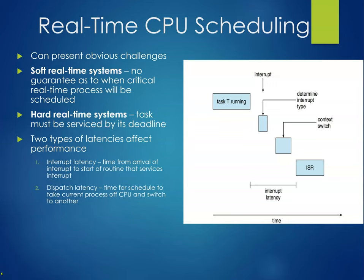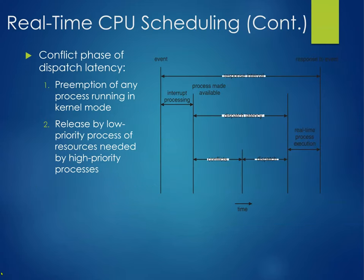Real-time CPU scheduling is a whole other area. Soft real-time systems provide no guarantee as to when a critical real-time process will be scheduled. Hard real-time systems have tasks that must be serviced by a deadline. Two types of latencies affect performance: interrupt latency — the time from the arrival of an interrupt to the start of the routine that services it — and dispatch latency — the time for the scheduler to take the current process off the CPU and switch to another. In real-time scheduling, low-priority processes essentially get preempted almost all the time.